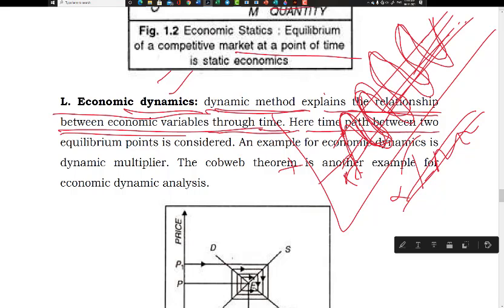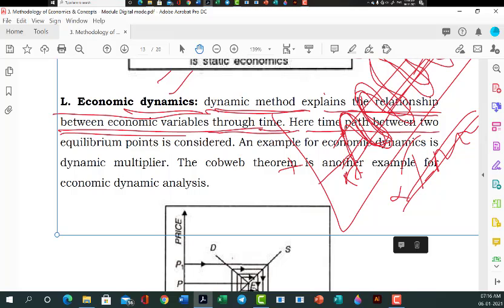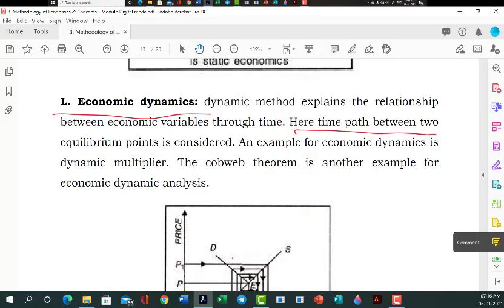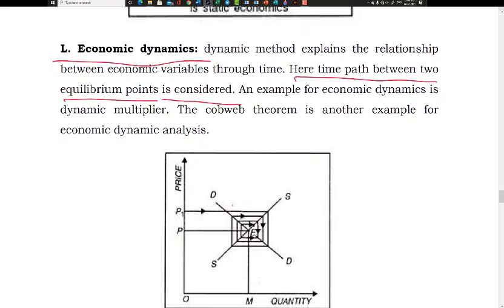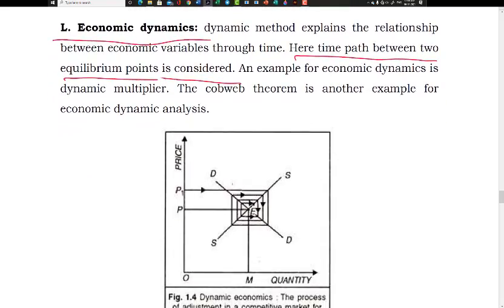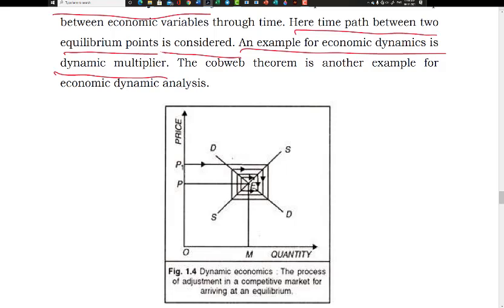Rather than what happened today, what will happen tomorrow, next day, two or three days after — through all time we consider the clash between variables from one time period to another. This continuous analysis of relations between different variables over a period of time is called dynamic method or dynamic analysis. The dynamic method explains the relations between economic variables through time.